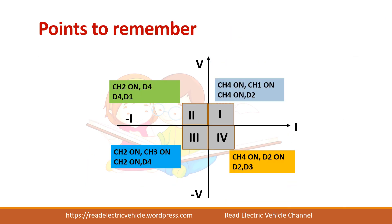A useful memory tip: quadrants 1 and 3 have a similarity, as do quadrants 2 and 4. For first quadrant operation, CH4 and CH1 are used; for third quadrant operation, CH2 and CH3 are used — so CH4 is common to both first and fourth quadrant motoring, and CH2 is common to second and third quadrant braking. Similarly, in the second and fourth quadrants only one switch is active at a time — CH2 in the second, CH4 in the fourth.